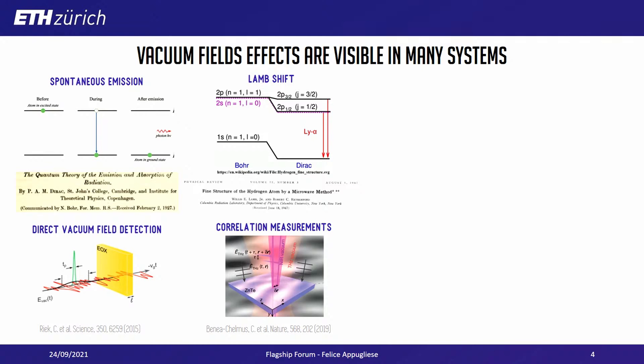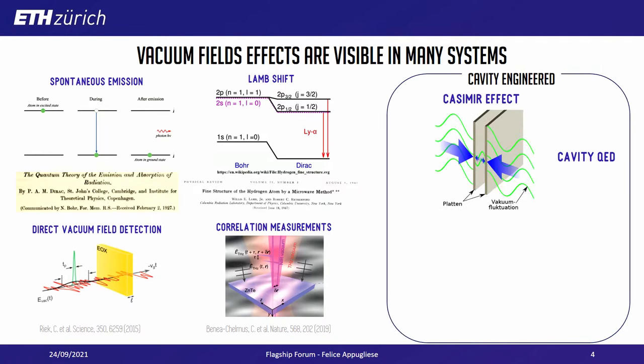But at the same time, vacuum can also be engineered using cavities. One of the most famous experiments is the Casimir effect, where we bring together two metallic plates and exploit the fact that a different distribution of vacuum fields inside and outside generates a net attractive force between the plates.